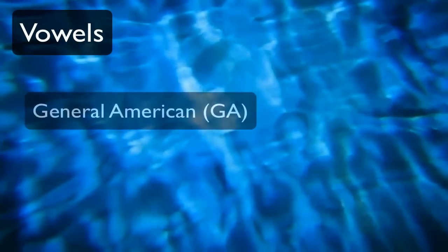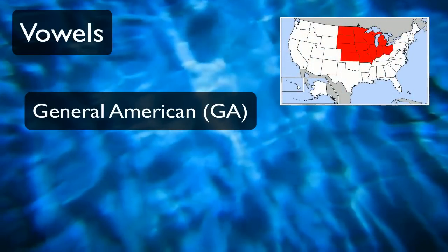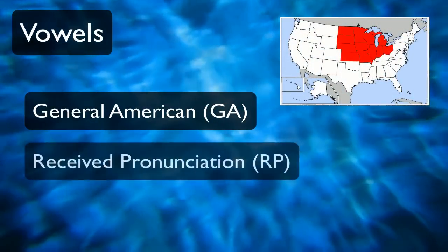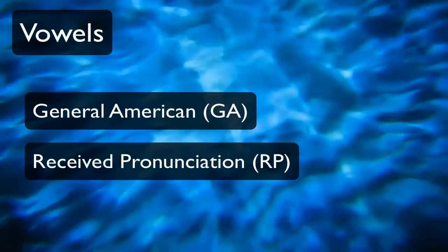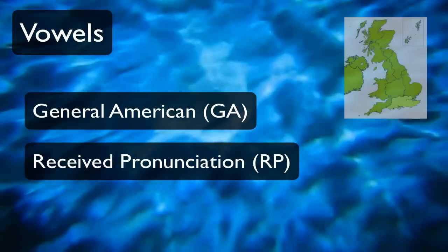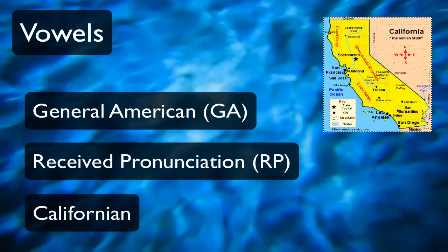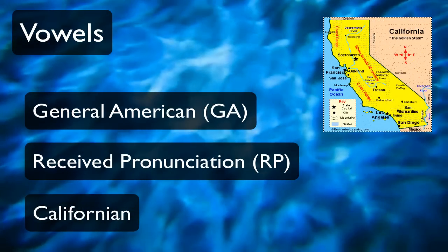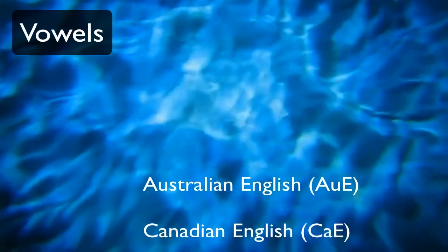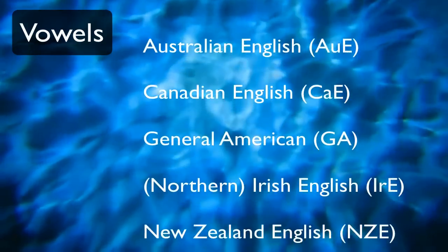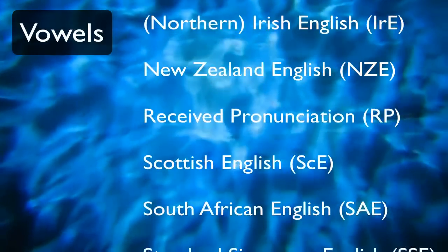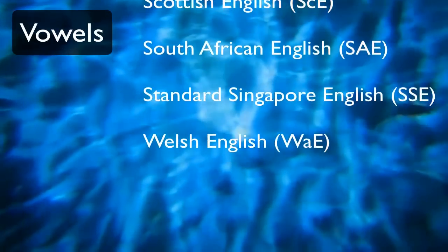I'll be discussing three English dialects here: General American, which is sort of an average dialect of the Central Midwest; Received Pronunciation, or the Queen's English, or BBC English, which originally came out of Southeastern England; and we'll talk a little bit about Californian, my dialect. If you have another dialect, there's a pretty good chart on Wikipedia with ten different dialects and all the differences between them, linked in the video description below. The concepts will be the same — only some of the vowels you use will be a bit different than the ones I use.